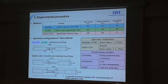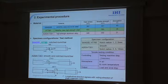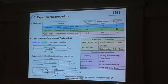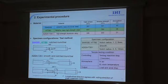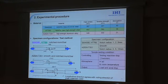Here you can see the experimental procedure. The materials used in this study are 400 MPa class and 780 MPa class steel materials, and a high-strength aluminum alloy, as shown in this table. We used smooth and notched tensile specimens with different notch radii. Tensile tests were conducted under displacement control in air at room temperature.